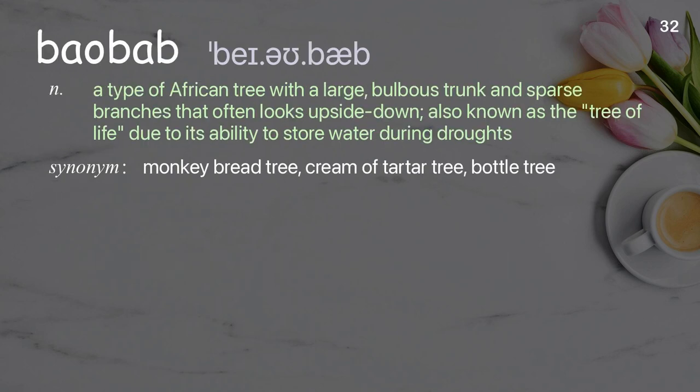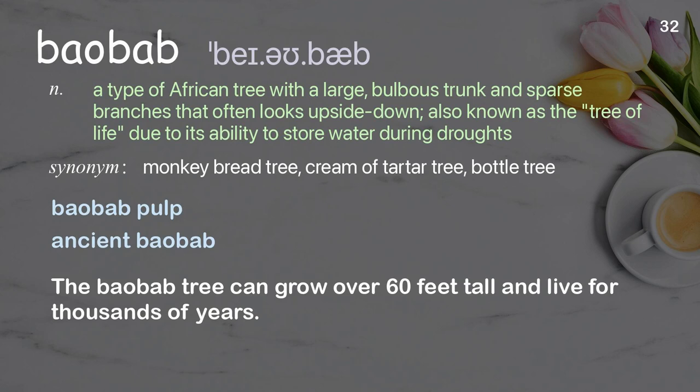Baobab: a type of African tree with a large, bulbous trunk and sparse branches that often looks upside down, also known as the tree of life due to its ability to store water during droughts. Examples: baobab pulp, ancient baobab. The baobab tree can grow over 60 feet tall and live for thousands of years.